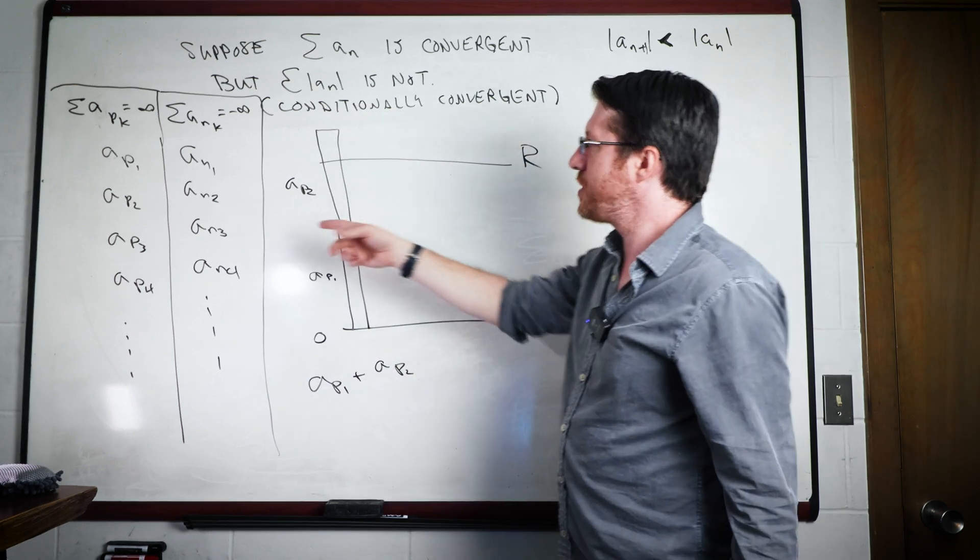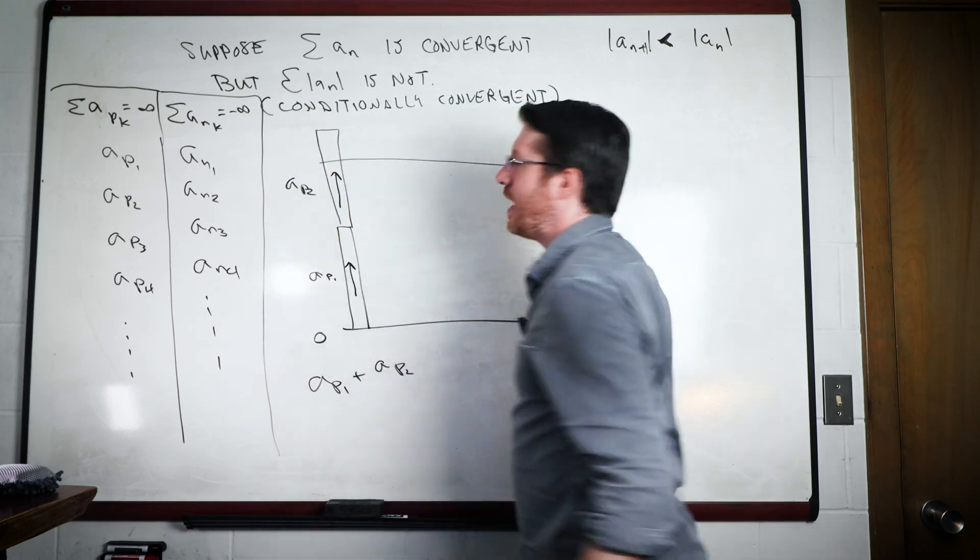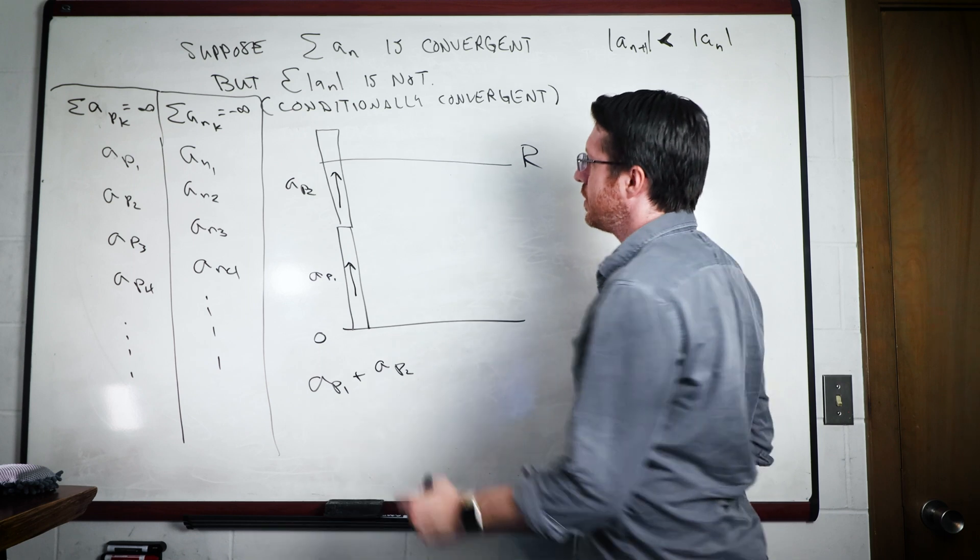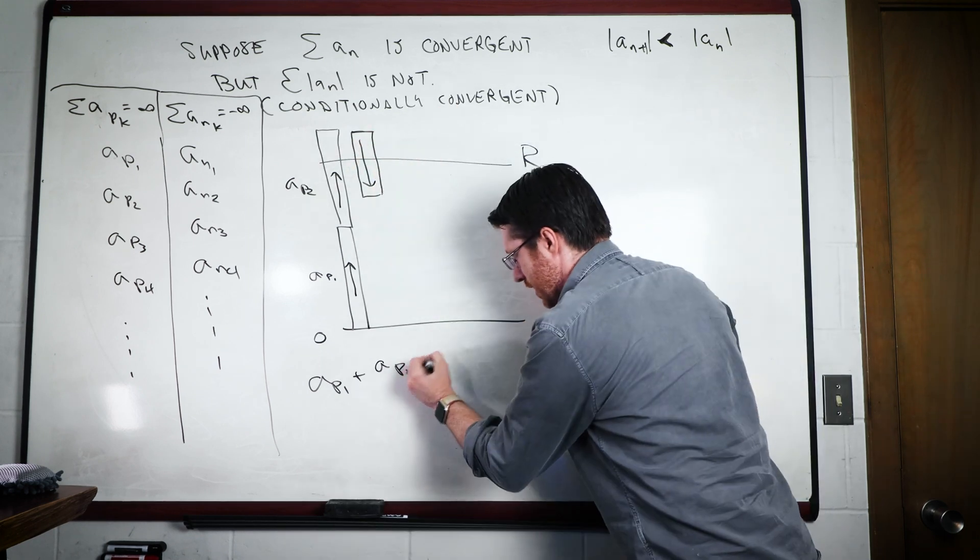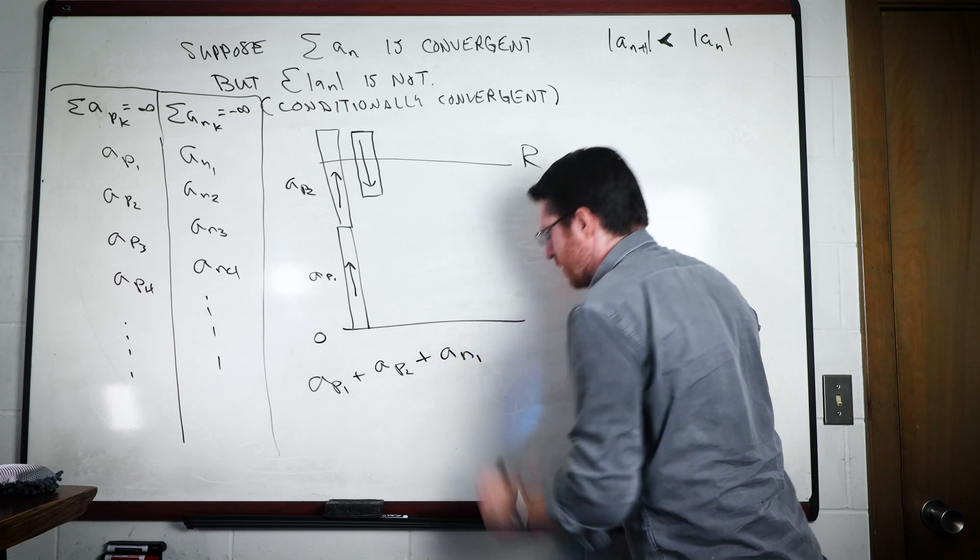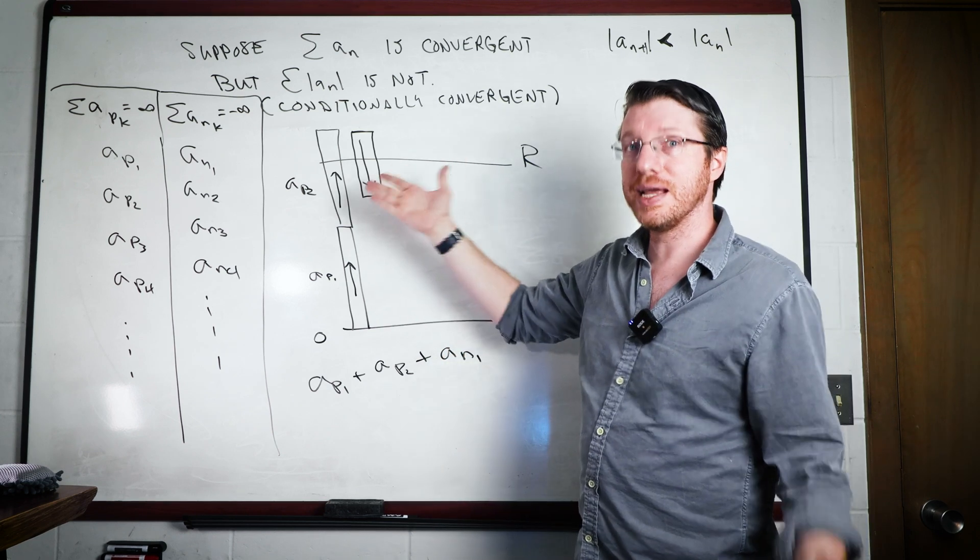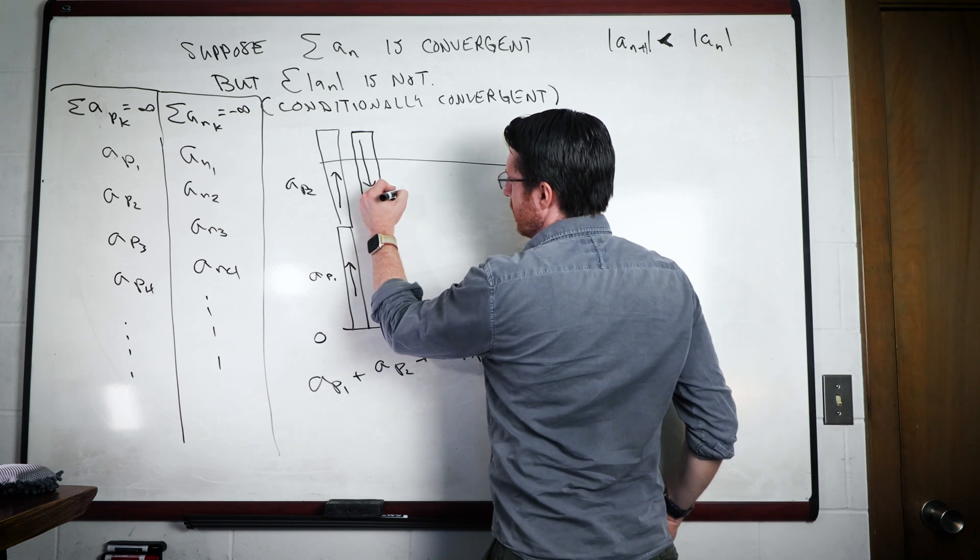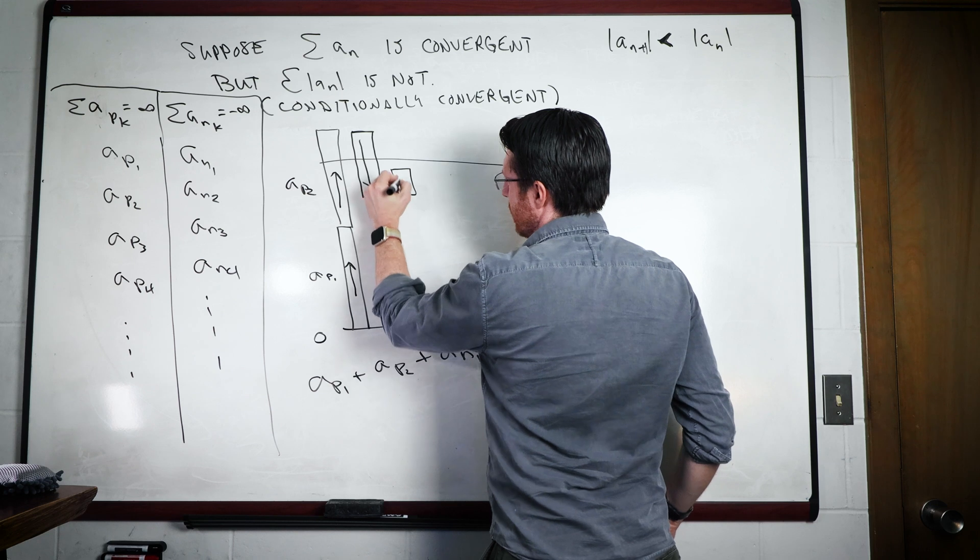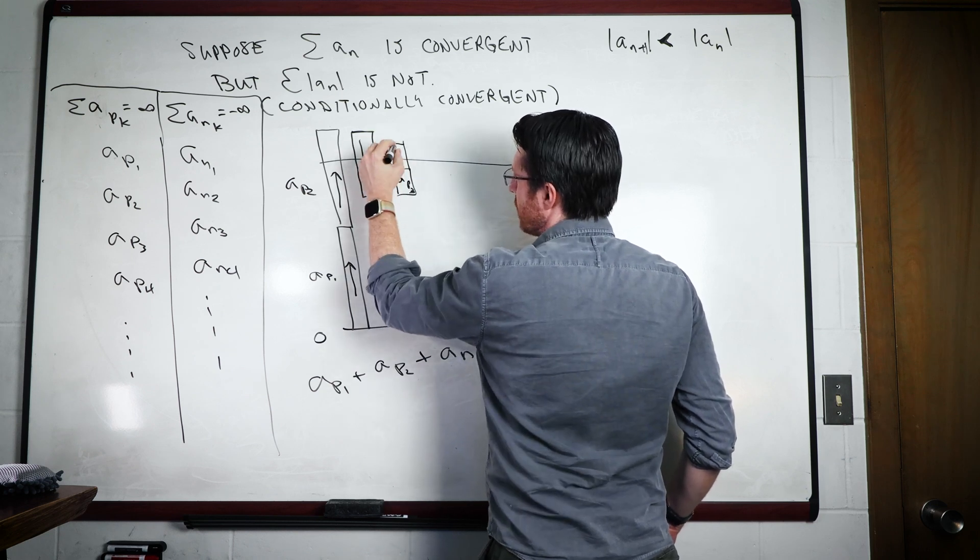So then what you do is you take your negative terms, and you go the other way. So now we know we're down below r after the same single step, and so we're going to say this is going to be a_n_1 here. And so now we're down underneath r, and so we stop. And then what we're going to do is we're going to go up again. And this time we're going to use a_p here.